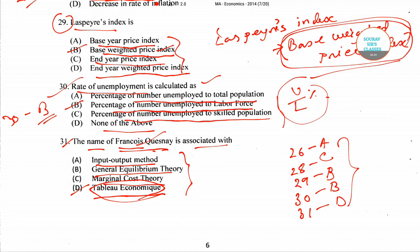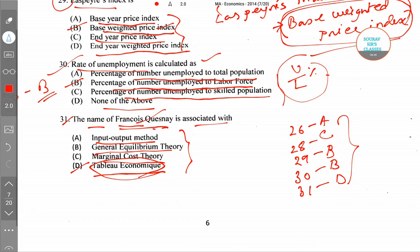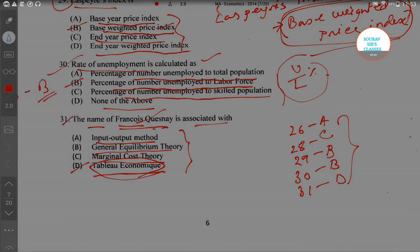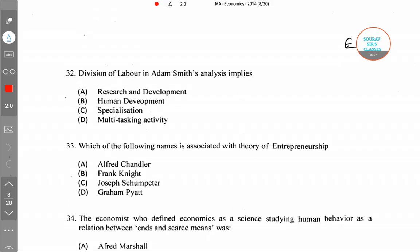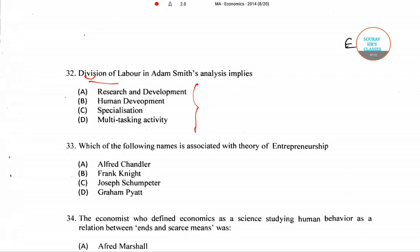Now moving to question number 32: division of labor in Adam Smith's analysis implies specialization — each worker specializes in one particular area. So for question number 32, the right answer is option C.